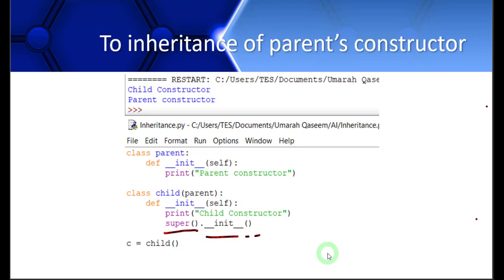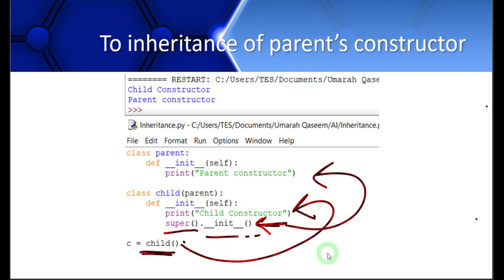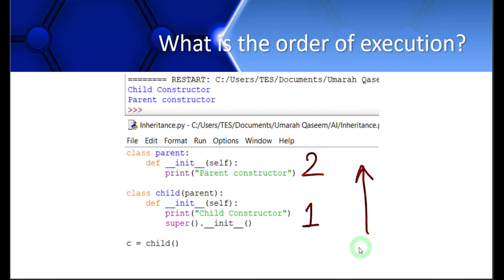From this example, you can see the order of execution of constructors: first the child constructor executes, and then the parent constructor. The call comes to the child constructor first, it executes, and then the parent constructor executes upon the super().__init__() call. We can also change this by moving the super().__init__() call to the very start of the child constructor, so the parent constructor executes first and the child constructor code follows.